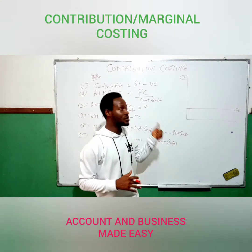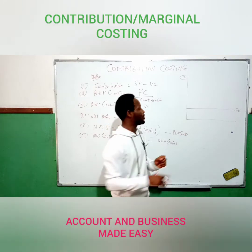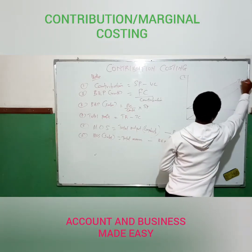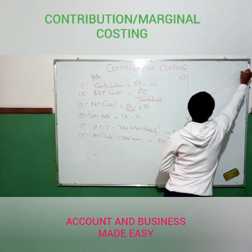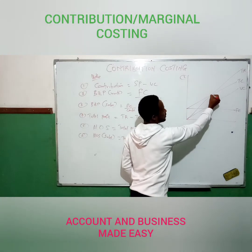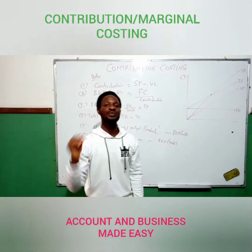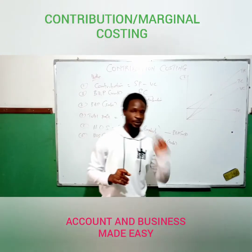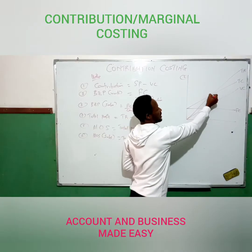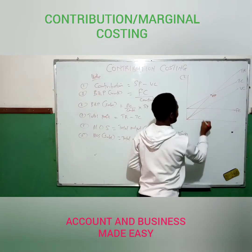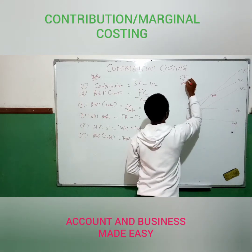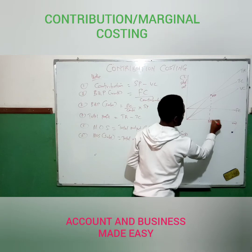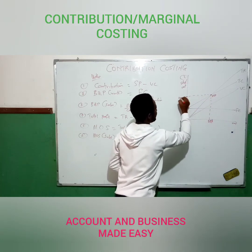Fixed cost in contribution costing is cost that will not change in the short run with level of output. We have the variable cost curve, the total cost curve, and finally the total revenue line. The point at which total cost equals total revenue is the break-even point — where fixed cost is equal to contribution. This point of intersection is the break-even point: on the horizontal axis it shows break-even point in units, and on the vertical axis it shows break-even point in sales.